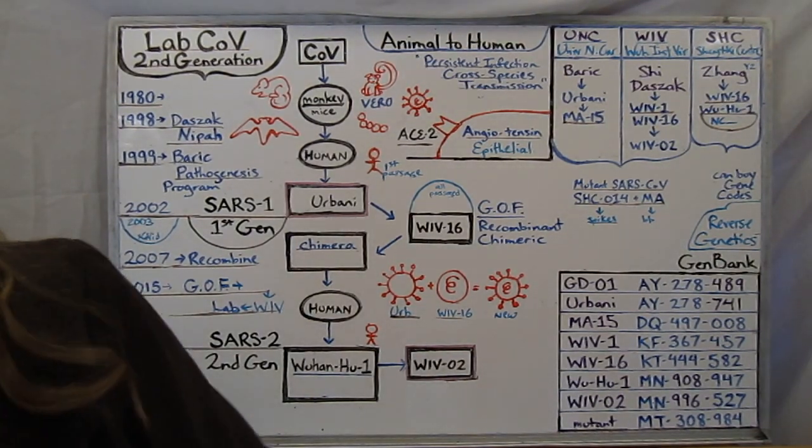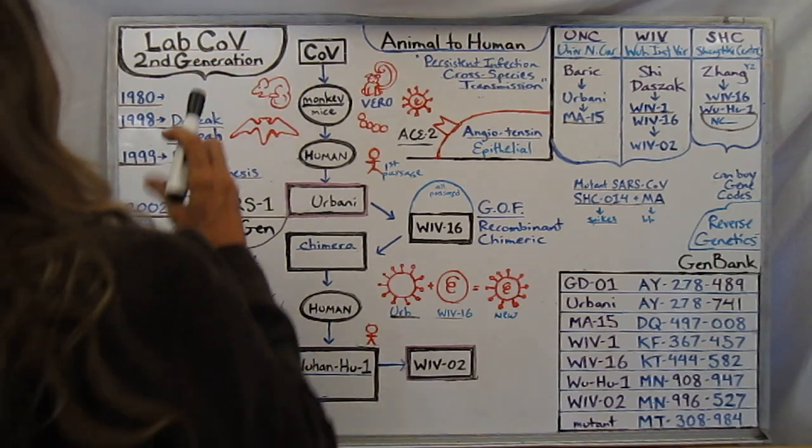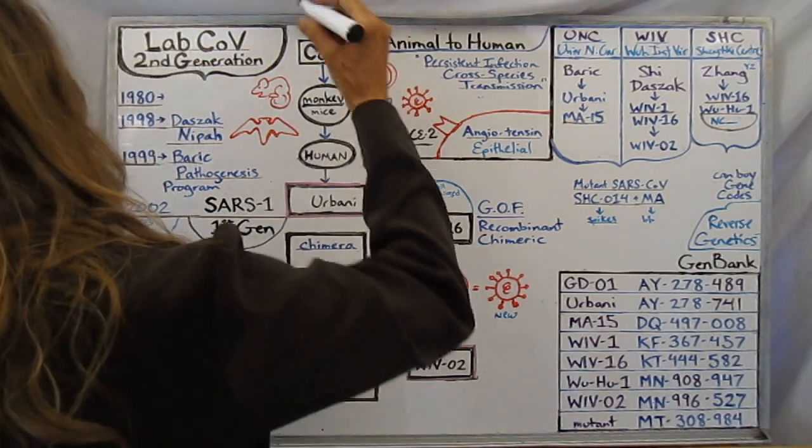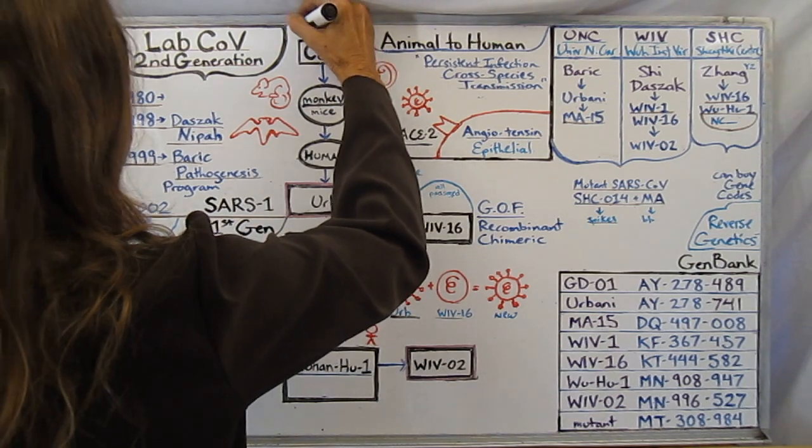Lab CoV, the second generation. The thing is this is an animal virus that could not infect humans and they worked very hard for decades in the lab trying to get it to do so.